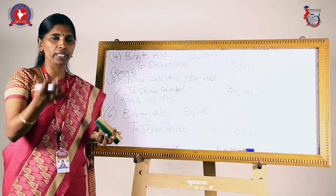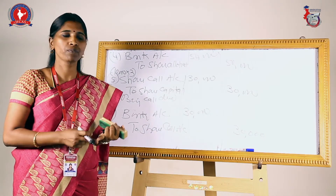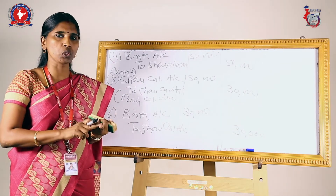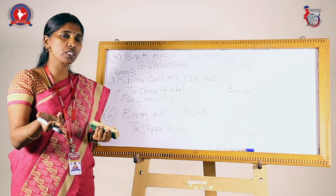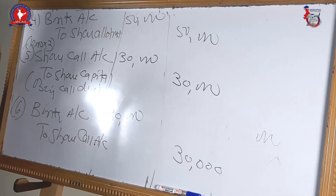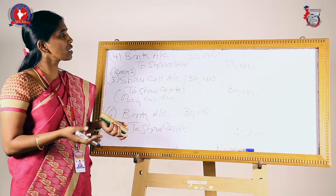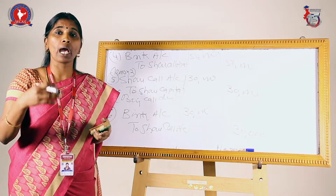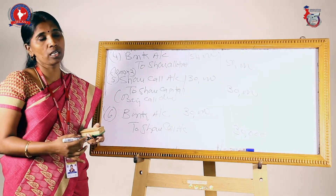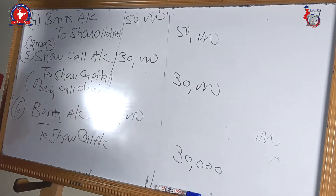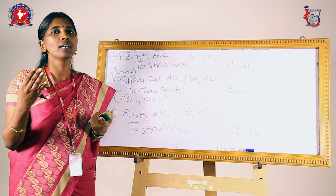This is the general basic process of shares when issued in installments. There are also chances that the company may issue 10,000 shares but the public may apply for 20,000 shares — that is called over subscription. Or a company issues 10,000 shares but the public applies for only 8,000 shares — the balance is called under subscription.